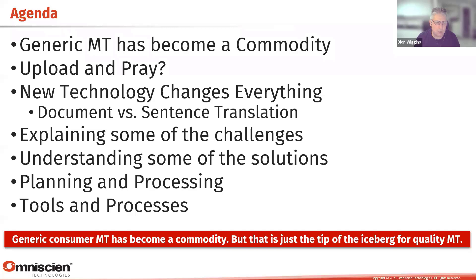Today I'll be talking about generic MT and how it's become a commodity, one of my favorite phrases — 'upload and pray' — new technology that's changing everything, and document versus sentence translation. I'll explain some of the challenges and solutions. When you look at things like Google, it's still using sentence translation, where each sentence is unaware of any other sentence around it. I expect Google will change in the not too distant future, but the world is now beginning to move to document-level or document-context translation.